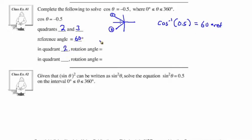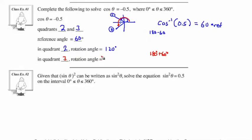In quadrant 2, the rotation angle goes from standard position all the way to that point. Since the reference angle is 60, we're thinking about 180 minus 60, so that is 120 degrees for the rotation angle. Then in quadrant 3, we went 180 degrees and then added 60 degrees, so the rotation angle is 180 plus 60, that's 240 degrees.